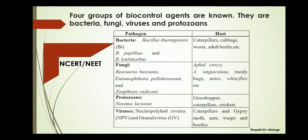In bacteria, examples include Bacillus thuringiensis, Bacillus papilliae, and Bacillus lentimorbus. These bacterial pathogens act against host insects such as caterpillars, cabbage worms, and adult beetles. Bacillus thuringiensis, Bacillus papilliae, and Bacillus lentimorbus all fight against these host insects and save the host plant from disease.